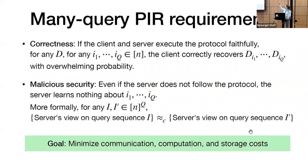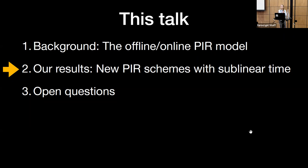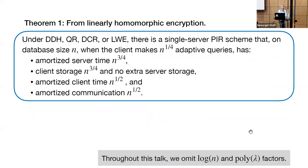Now that we have these two requirements, our goal is to minimize the costs of our PIR schemes: minimize the communication between the client and the server, minimize the computation especially on the server side, and minimize the storage costs, which in our schemes are only on the client side. So now we are ready to look at some PIR schemes, and I'm going to give you a more formal overview of what exactly we prove.